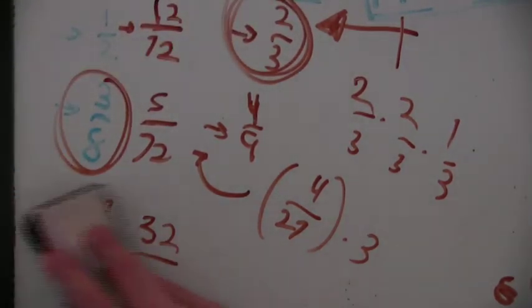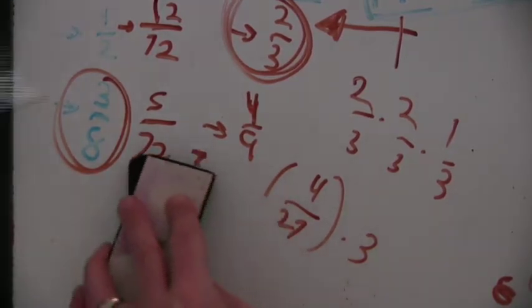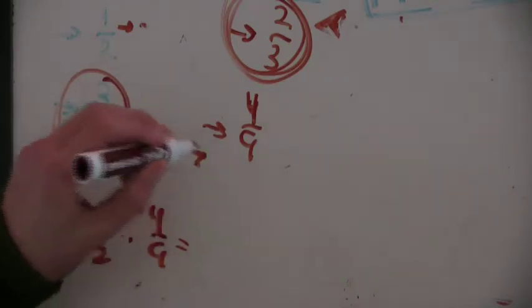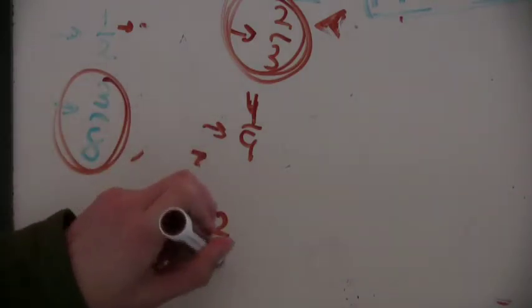So you just compute the probabilities of that happening, which I already have the numbers here. Yeah, I'm not going to erase all of them. And then you discover which one's more likely. Okay. So I'll do the first one is coin 1 first. Okay. That's 1 half times the second one being coin 2 is 4 9ths. So it's 2 9ths.